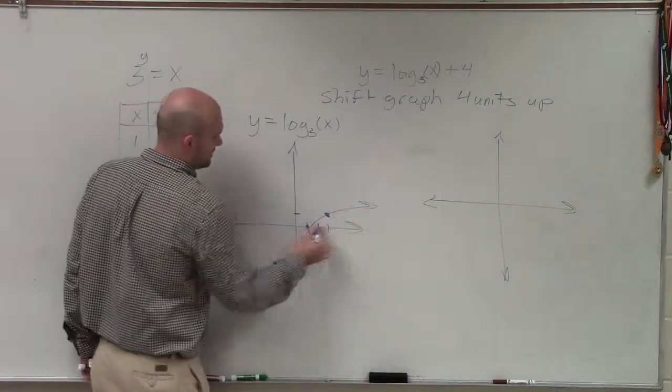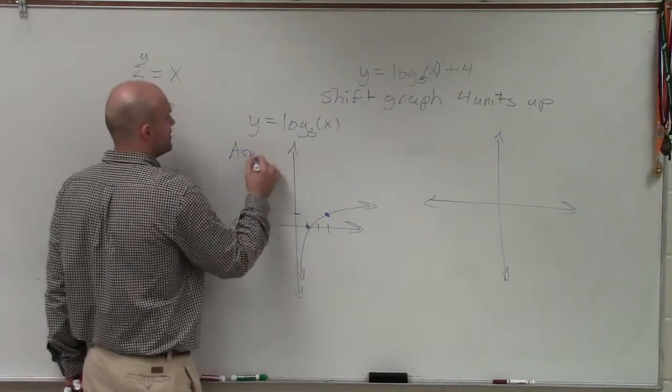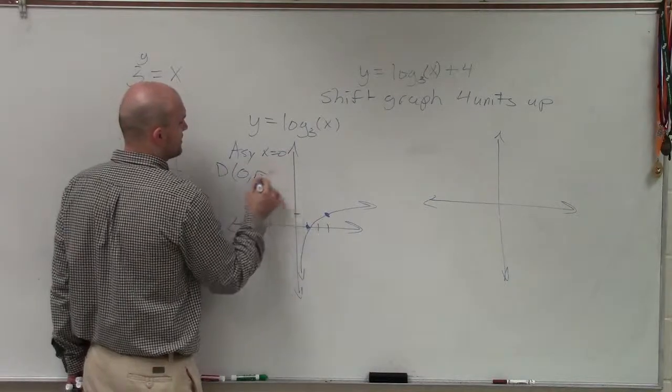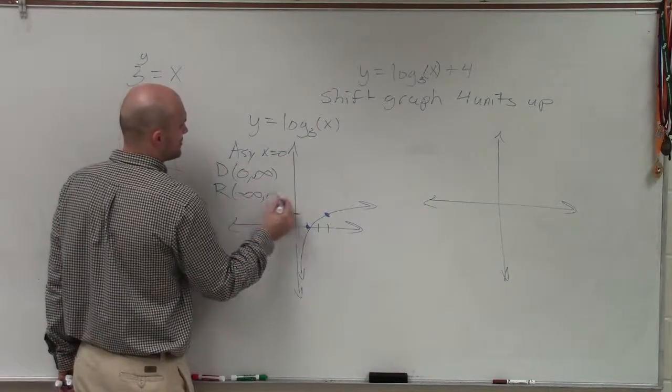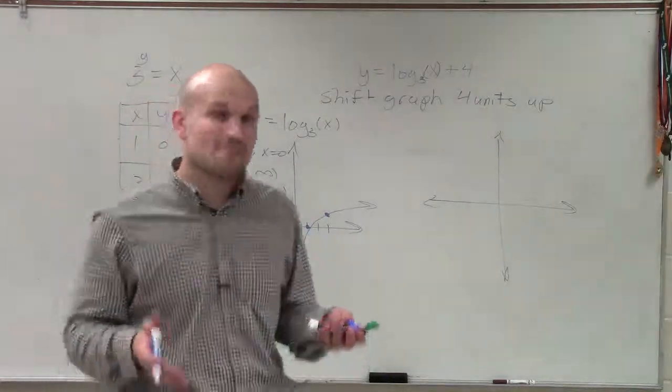Therefore, my graph is going to look something like this. And we know this graph has an asymptote at x equals 0. We have a domain from 0 to infinity and a range from negative infinity to infinity. So these are all a part of our parent graph.